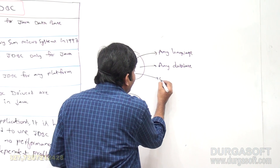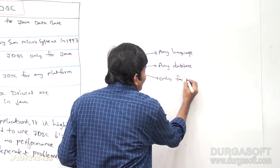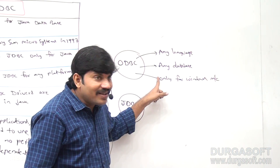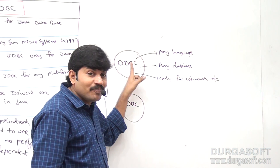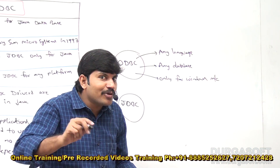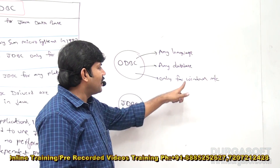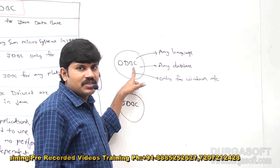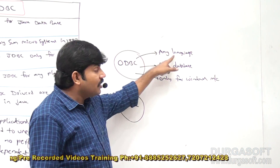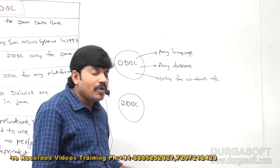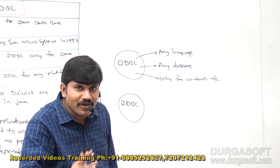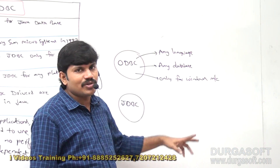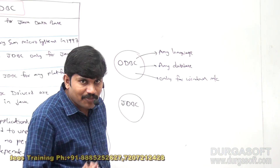But ODBC is applicable only for Windows machines. Because it is technology from Microsoft, they have to promote their operating system. That's why it is applicable only for Windows machines. Some people tried for Linux — they failed.